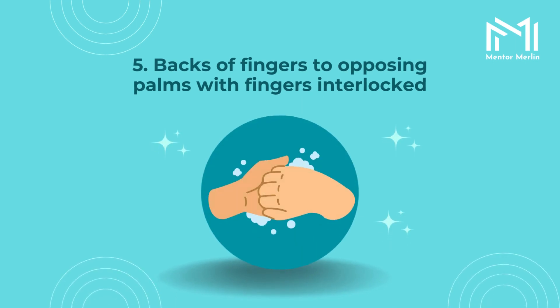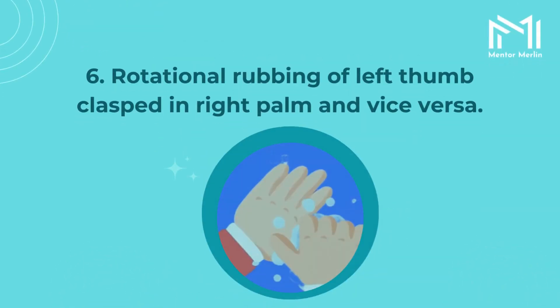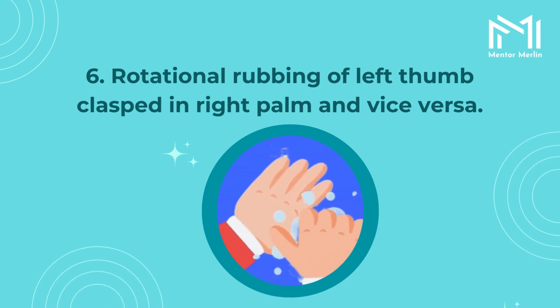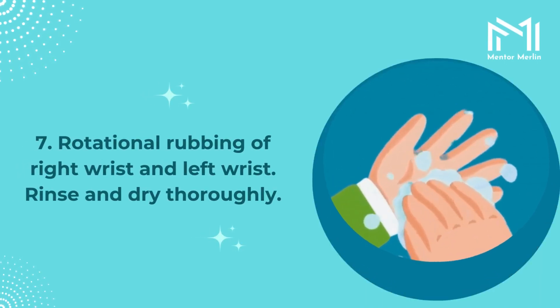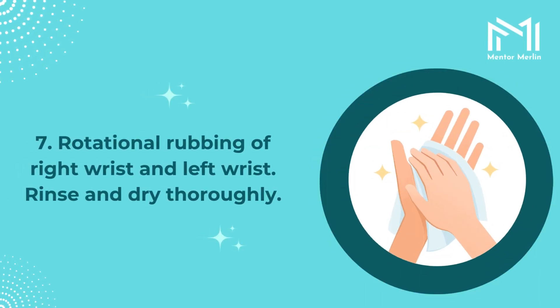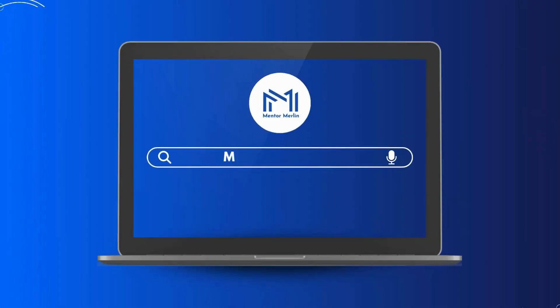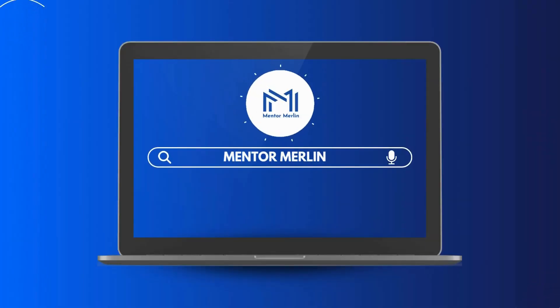Step 5: Backs of fingers to opposing palms with fingers interlocked. Step 6: Rotational rubbing of left thumb clasped in right palm and vice versa. Step 7: Rotational rubbing of right wrist and left wrist. Rinse and dry thoroughly.